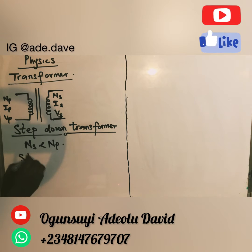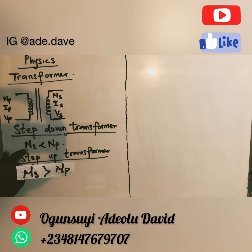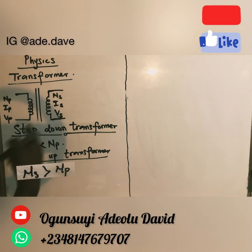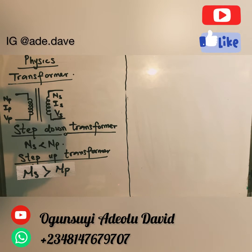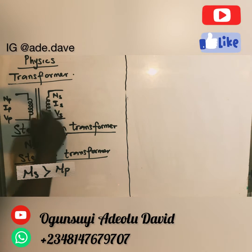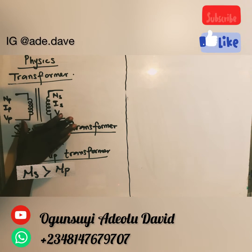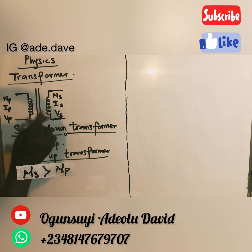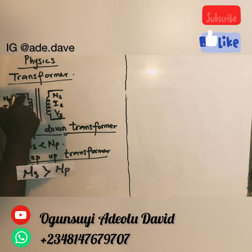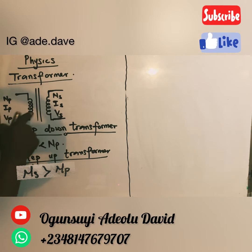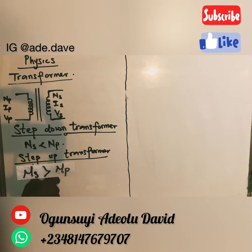For your step-up transformer, the number of coils determines the current you have. If you have a higher coil count, you have higher current and higher voltage. So the number of turns of coil you have determines if your transformer is going to be step-down or step-up. If the number of coils in the secondary is higher than in the primary, it is a step-up transformer. If it is lesser, you automatically have a step-down transformer.